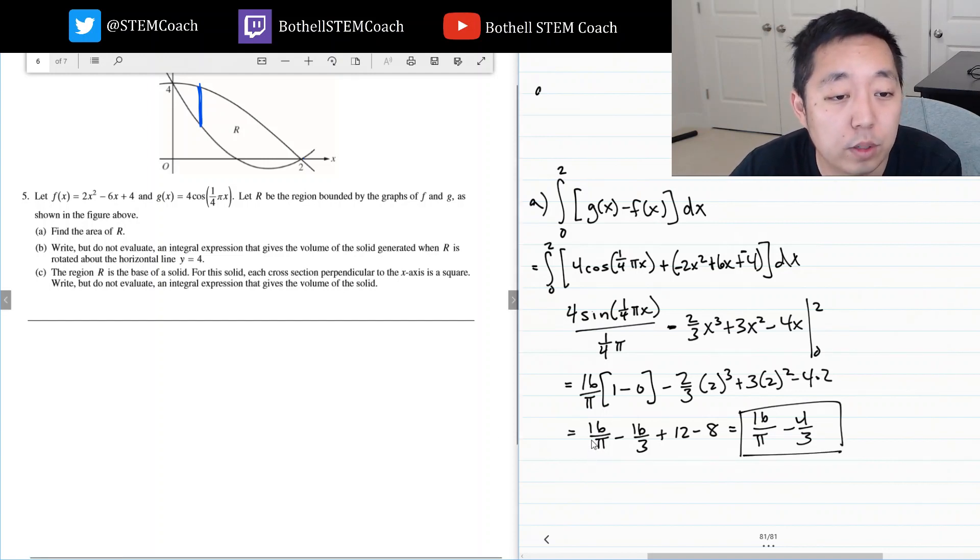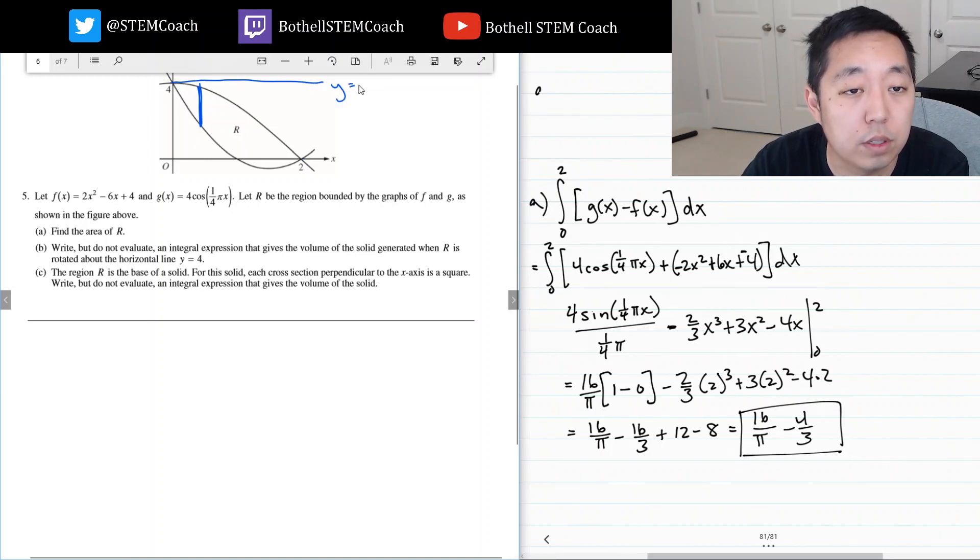Write, but do not evaluate, an integral expression gives the volume of the cell generated when R is rotated around the horizontal line y equals 4. So this line right here. So for b, y equals 4, this line, I'm going to have to look at when I revolve it around that point. It's going to make little disks. If I take a look at like this slice here, for example, when I revolve it, it's going to make a disk. And the way I do it is I do the area of the disk is the outer radius minus the inner radius.